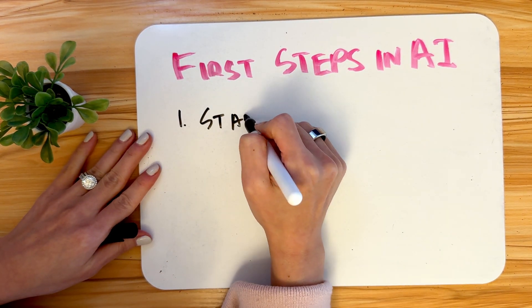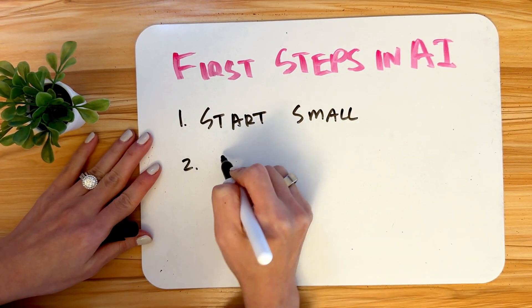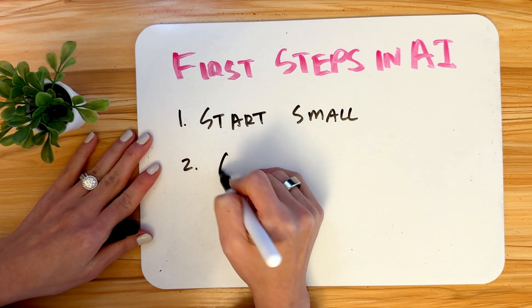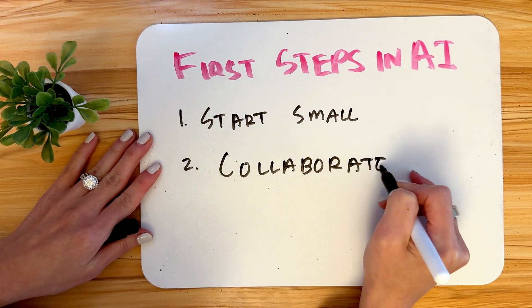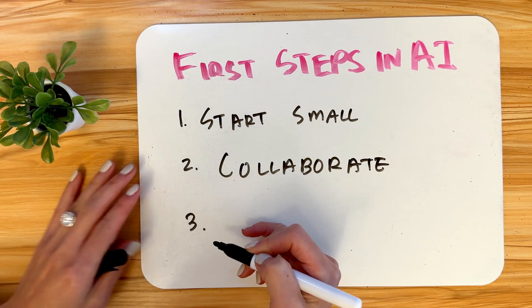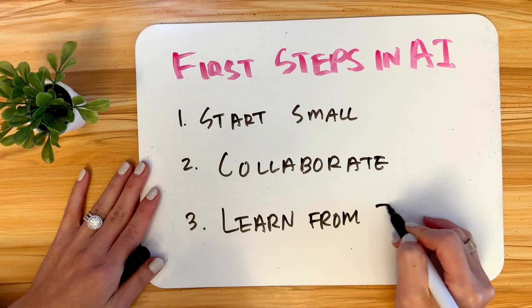The last section of module three offers tips for taking your first steps in AI. Tip one: start small by choosing manageable projects to build confidence and expertise. Tip two: work with friends, colleagues, or other AI professionals whenever you can. Tip three: experiment and learn by treating failures as learning opportunities.